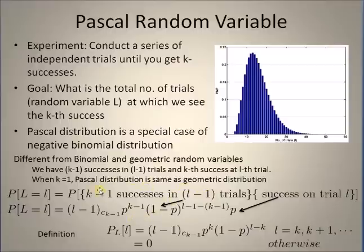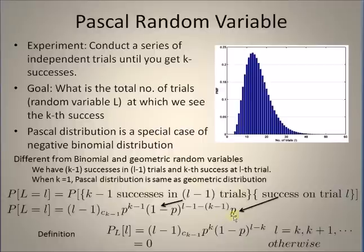The probability of the first event is the probability of a binomial random variable with l minus 1 trials and k minus 1 successes, given by the binomial probability mass function. The probability of the kth success occurring on the lth trial is simply p. Hence, the Pascal random variable has a probability which is the product of p with the binomial PMF.